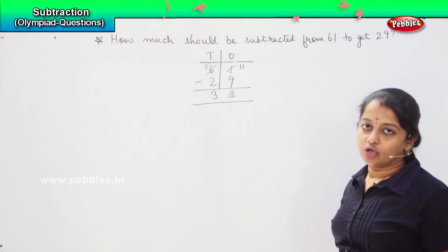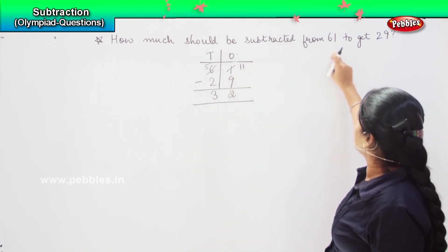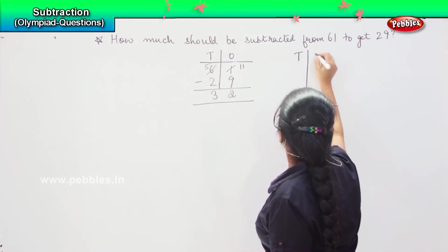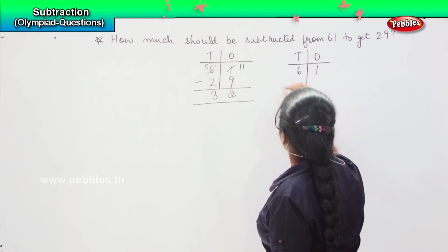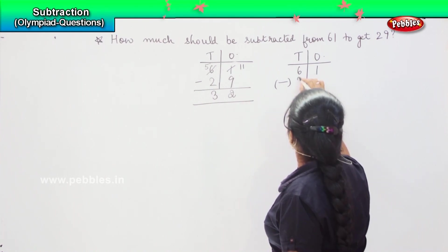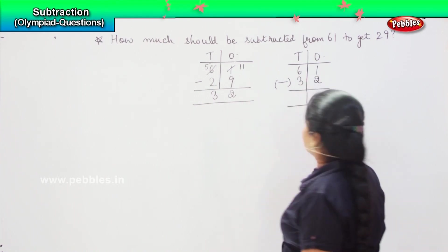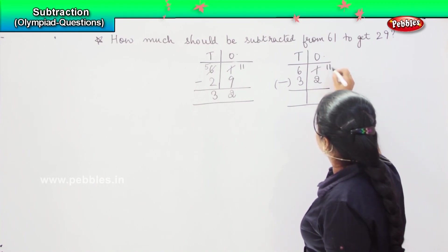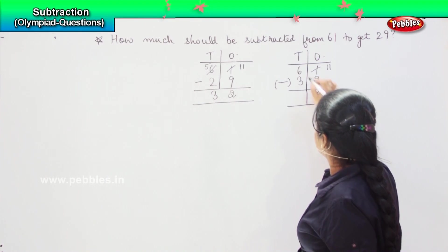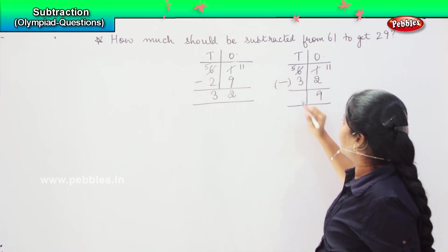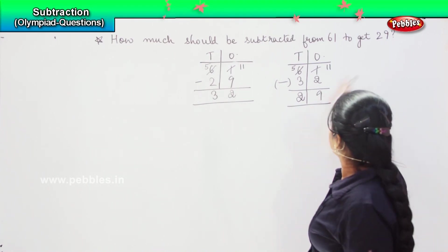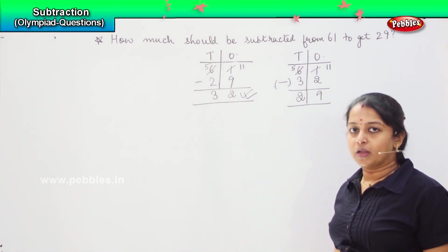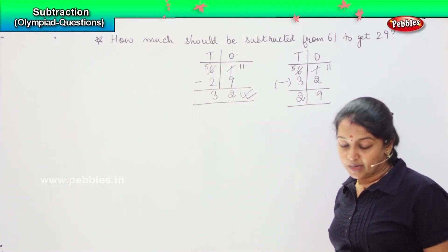In order to check whether this answer is correct or not — the question says how much should be subtracted from 61 to get 29 — let me verify: 61 minus 32. Again borrow: 11 minus 2 — counting down: 10, 9. That gives 9 here. Then this reduces by 1, so 5 minus 3 is 2. Yes, I am getting 29. Which means my answer 32 is the right one. Got it? Is it clear, children?